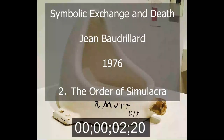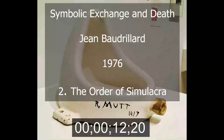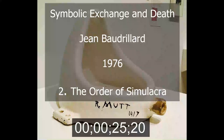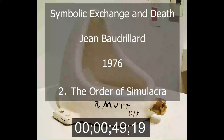Section 2: The Order of Simulacra. The Three Orders of Simulacra. There are three orders of simulacra, running parallel to the successive mutations of the law of value since the Renaissance. The counterfeit is the dominant schema in the classical period, from the Renaissance to the Industrial Revolution. Production is the dominant schema in the Industrial Era. Simulation is the dominant schema in the current code-governed phase. The First Order Simulacrum operates on the Natural Law of Value, the Second Order on the Market Law of Value, and the Third Order on the Structural Law of Value.